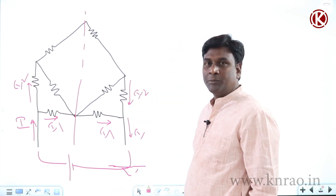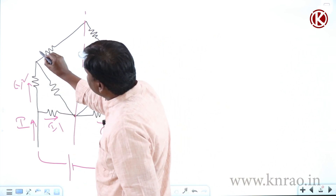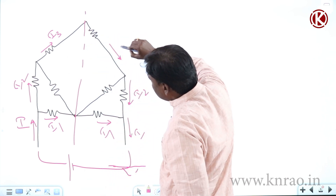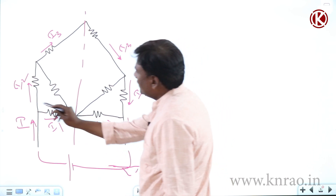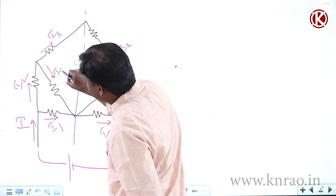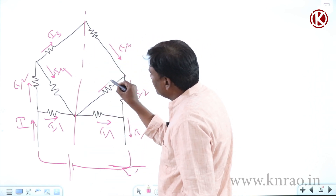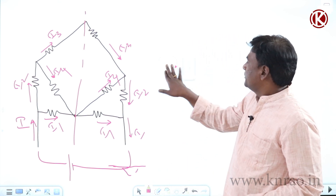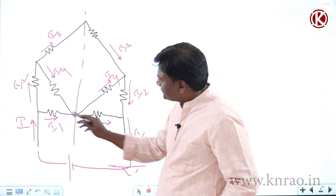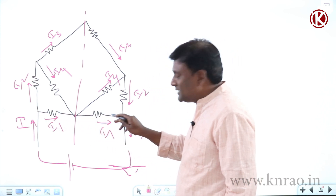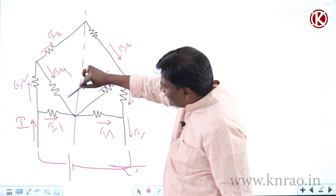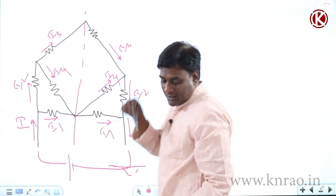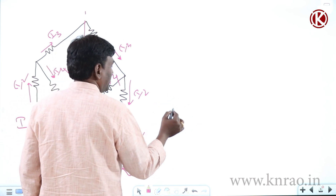Out of I2, maybe I3 is leaving here, so I3 should come from the corresponding symmetric side. Out of I2, maybe I4 is entering here, so I4 should enter from the symmetric side as well. Now the problem is solved — because if you closely observe, I1 is entering here and I1 is leaving from here, and I4 is entering here and I4 is leaving here. So this particular node can be split. Let me split and redraw it.